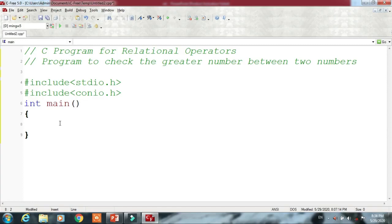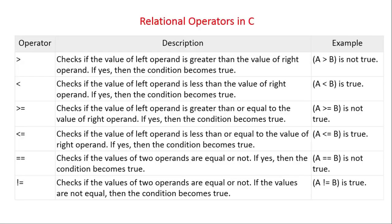Before proceeding to the program, let us first understand the relational operators in C. The relational operators are also called conditional operators because they check a condition between two variables.